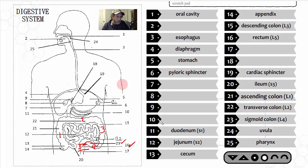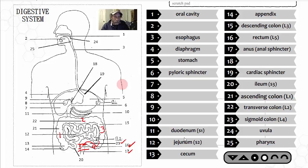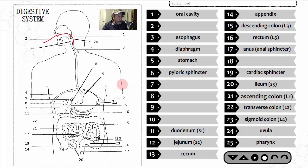The rectum stores feces until it can be released at the appropriate time. Structure number 17 is another sphincter valve — the anus or anal sphincter — which controls the actual release of feces from the body. Those are the major digestive organs along the main digestive tract — food entering the oral cavity and traveling one continuous path all the way through.